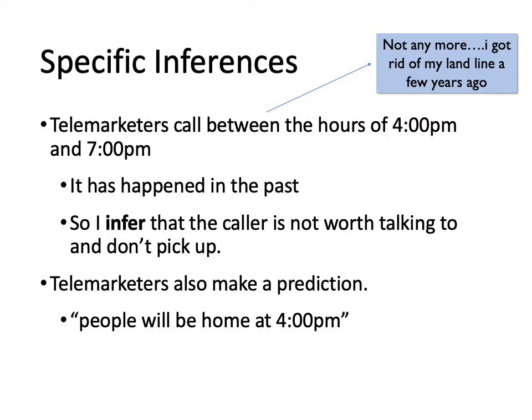On the other side of this, the companies that are calling are also making a prediction. They're basing their assumptions on the idea that people will be home between 4 and 7 — that's when many people are home from work, or when shifts might change over, and there's usually a meal coming up. So the telemarketers are making that prediction based on their prior experience. I'm making my prediction that it's going to be a telemarketer based on my prior experience. This is an example of a specific inference.